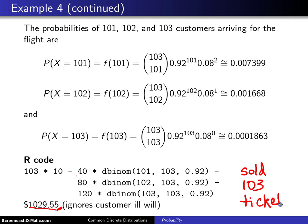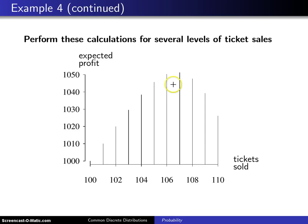But you can do this same exact analysis for selling 104 tickets or 105 tickets etc. and you will get this graph right here.